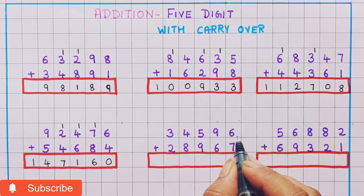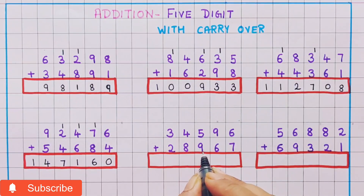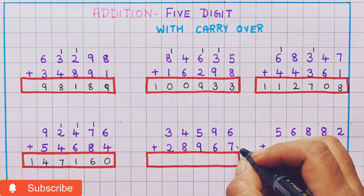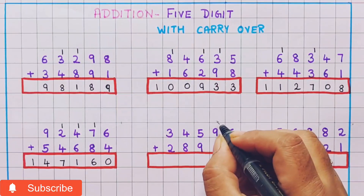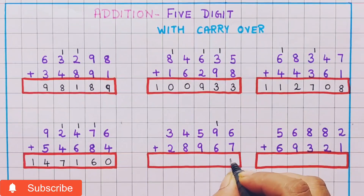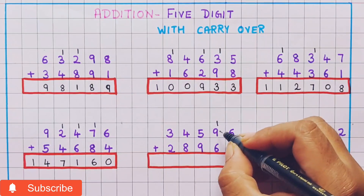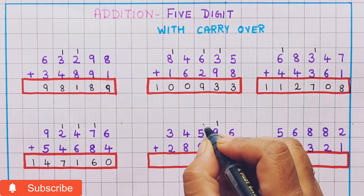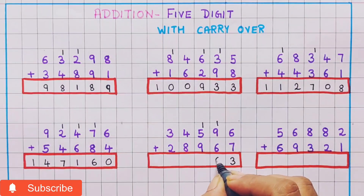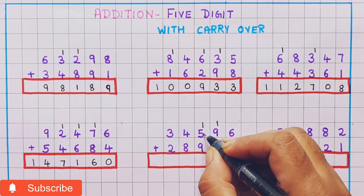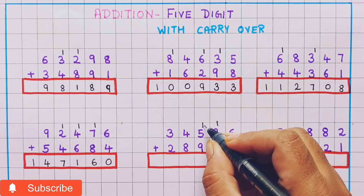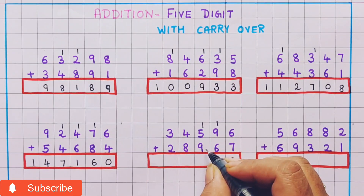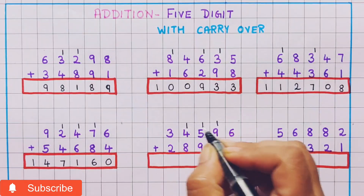Now let's do the next one: 34,596 plus 28,967. Now 6 plus 7 is 13, so I will write 1 and 3. 9 plus 1 is 10, plus 6 is 16, so I will write 1 and 6. Now 5 plus 1 is 6, and 6 plus 9 is 15, so I will write 1 and 5.